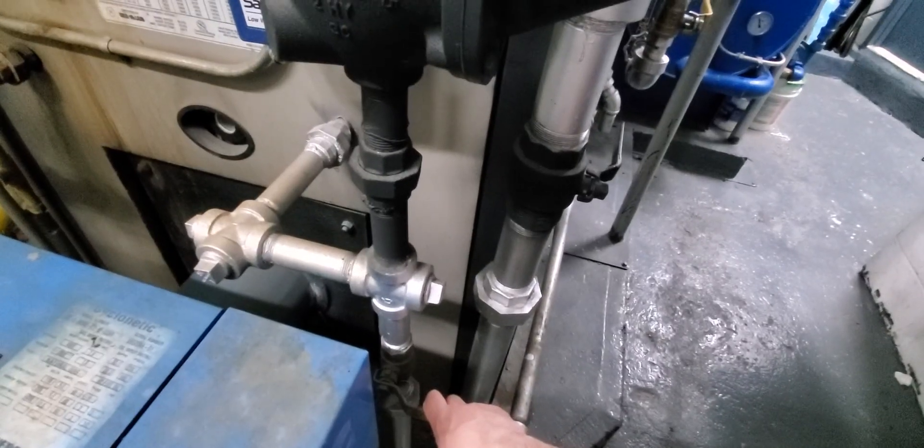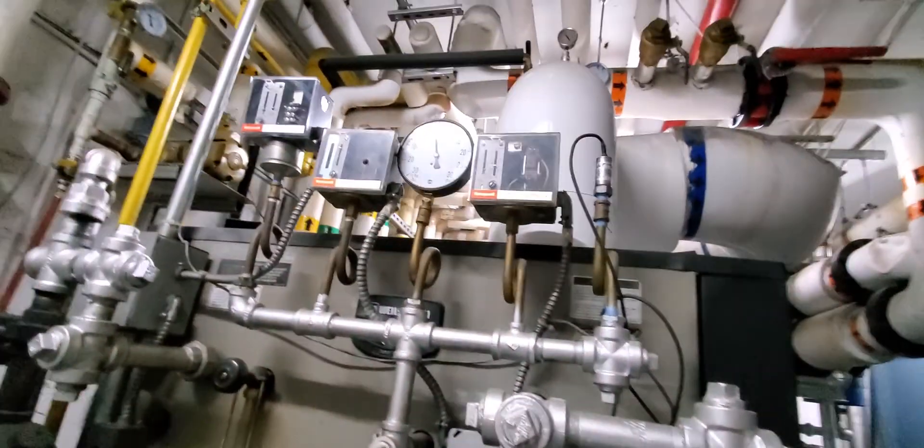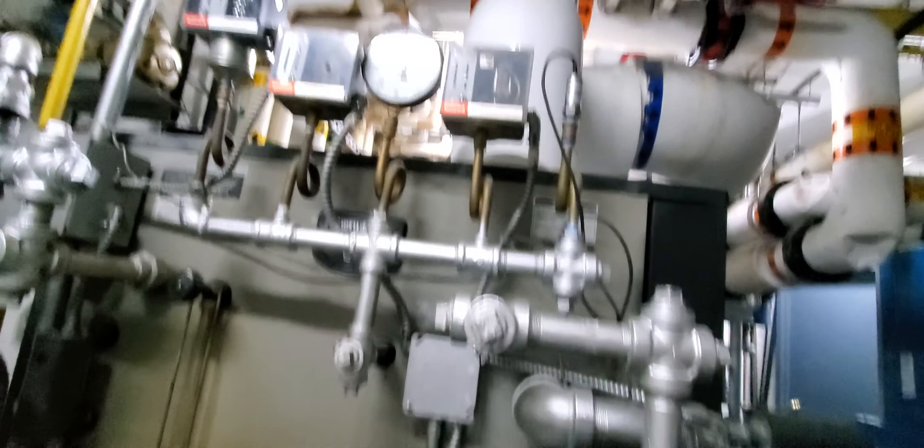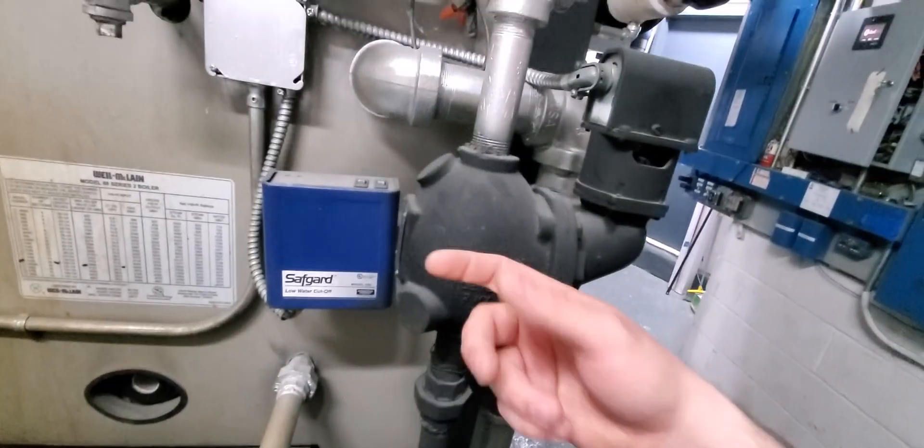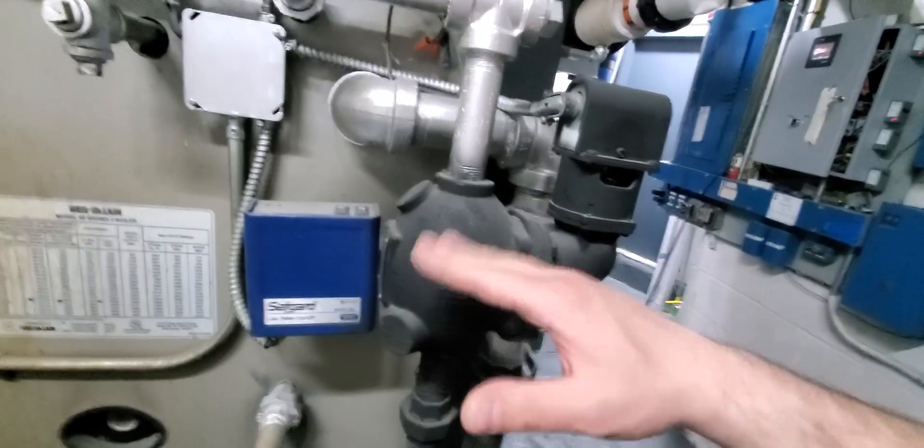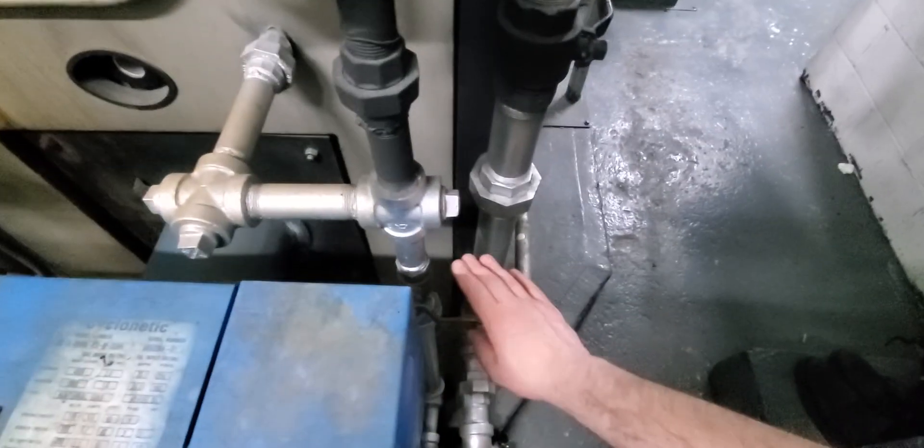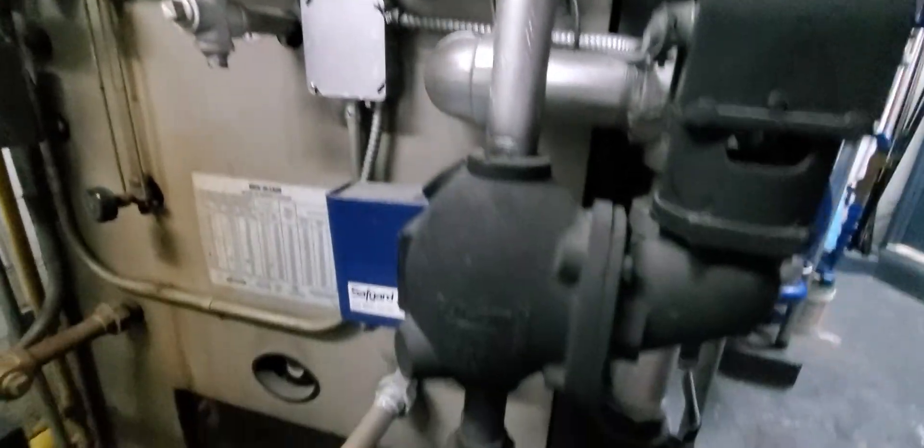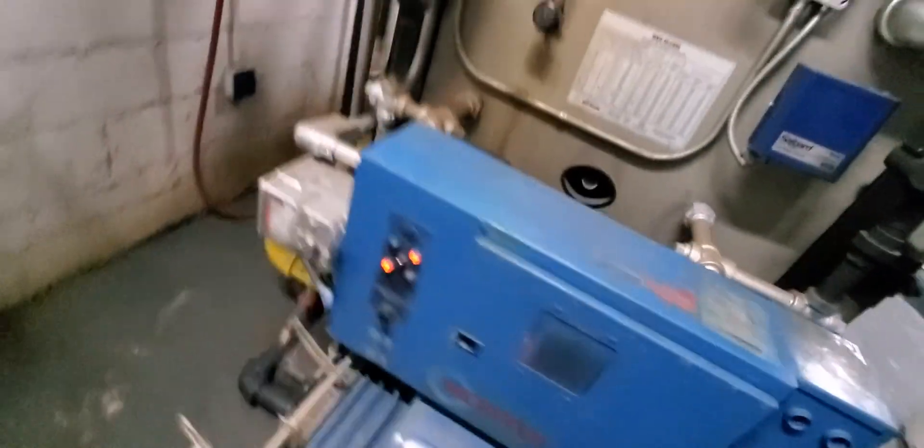When you do the low water cutoff, you need to do it slow. Otherwise, the boiler will trip out on the safety, and you'll have to manually reset it, or sometimes this will get stuck. You'll have to bang that with a wrench to get the flow loose. You really want to go slow with this. Sometimes I like to do that when the boiler is off, just so I don't risk it tripping out.